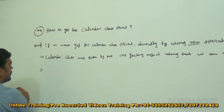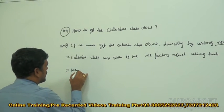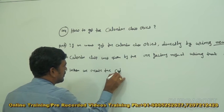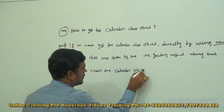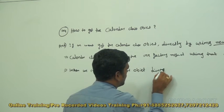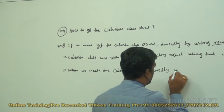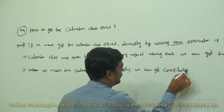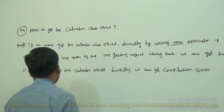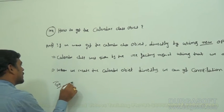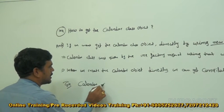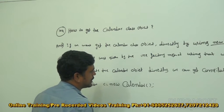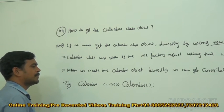When we create the Calendar class object directly, we get a compilation error. For example, if we write: Calendar c = new Calendar(), we are going to get a compilation error.